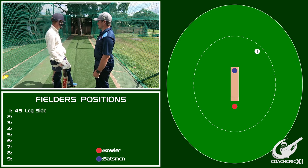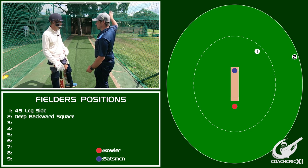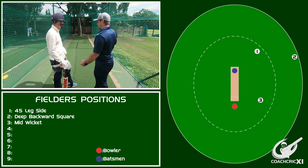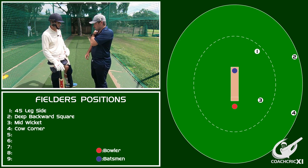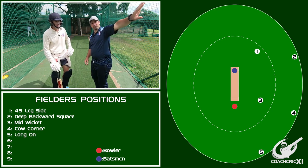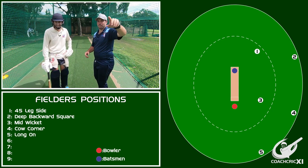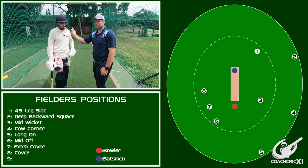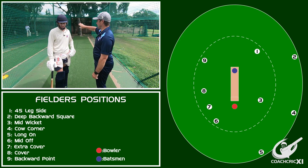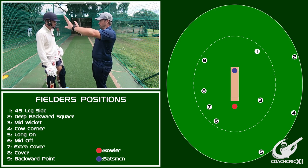The field we are going to use today starts with a 45 on the leg side, deep backward square slightly backward on the boundary, mid-wicket slightly straighter, cow corner on mid-wicket's right-hand shoulder, long on maybe a bit squarer, mid-off up, extra cover up, cover a little bit straighter, and then a backward point — obviously trying to turn it through the gate if you try and push into the bigger gap between point and cover.